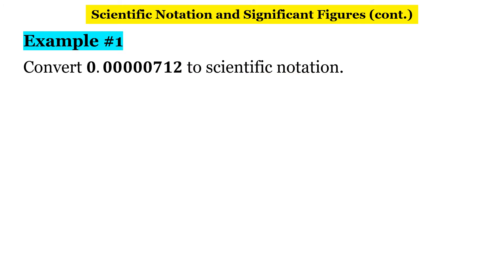Let's do an example. Convert 0.0000712 to scientific notation. Our first step is to identify the first non-zero number — going from left to right, we want to find the first digit between 1 and 9, which is our 7. Next, let's count how many places we have to move our decimal to end up with a number between 1 and 9 — that's 6 places — giving us 7.12, which is between 1 and 9. If I moved it one more place to the right, I'd have 71.2, which would be larger than 9, so we stop here.